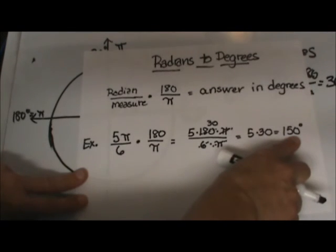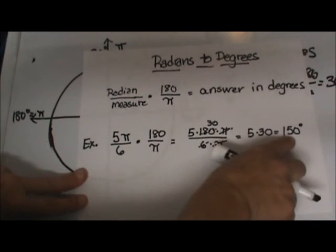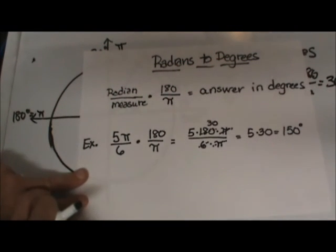You can also use your unit circle to locate that 5π/6 and that is where 150 degrees would be. Hope this video was helpful.